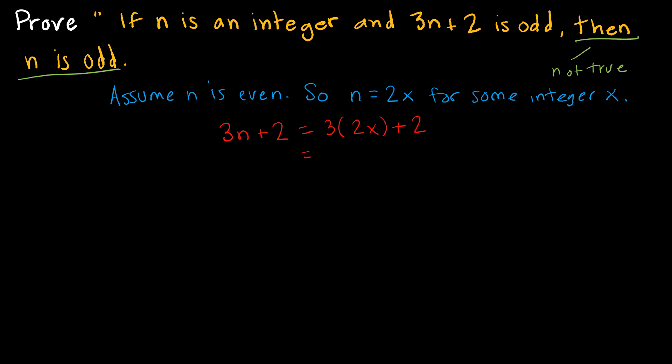Which is the same as 6X plus 2. And I really like to write it in this form. And so let's factor out a 2 to get 3X plus 1. Or I could just write that as 2Y, where Y is equal to 3X plus 1.